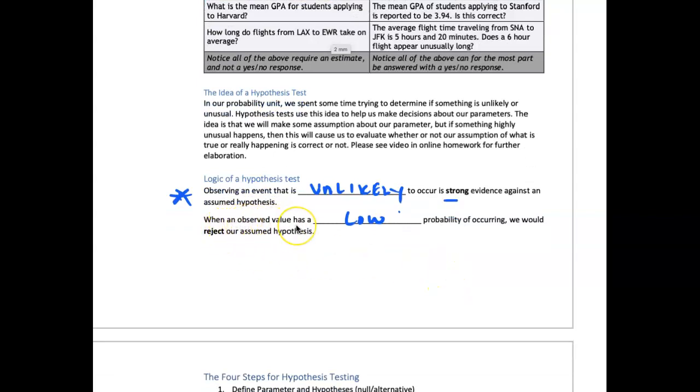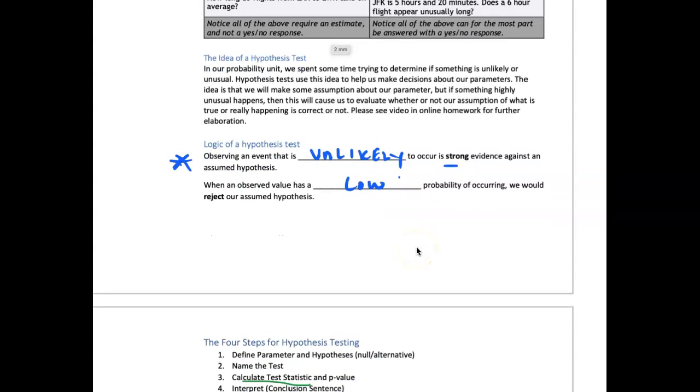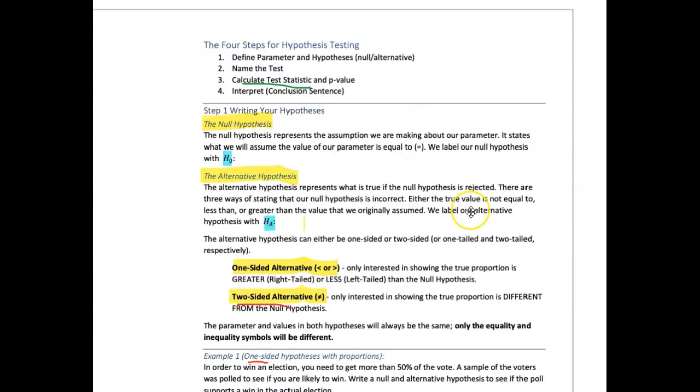When we observe a value, when an observer has a low probability of occurring, we would reject our hypothesis. So to conduct a hypothesis test, we have four steps similar to the confidence or the same four ideas.